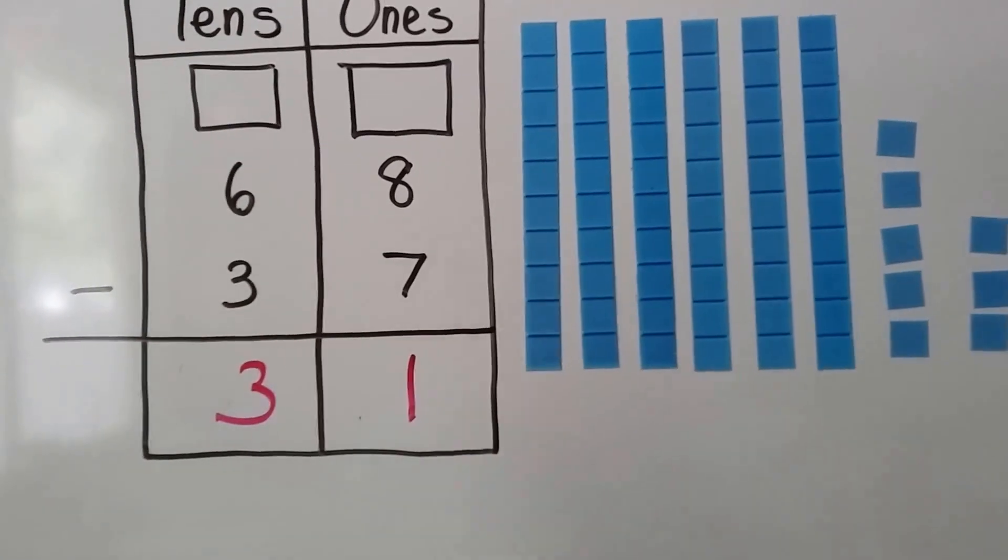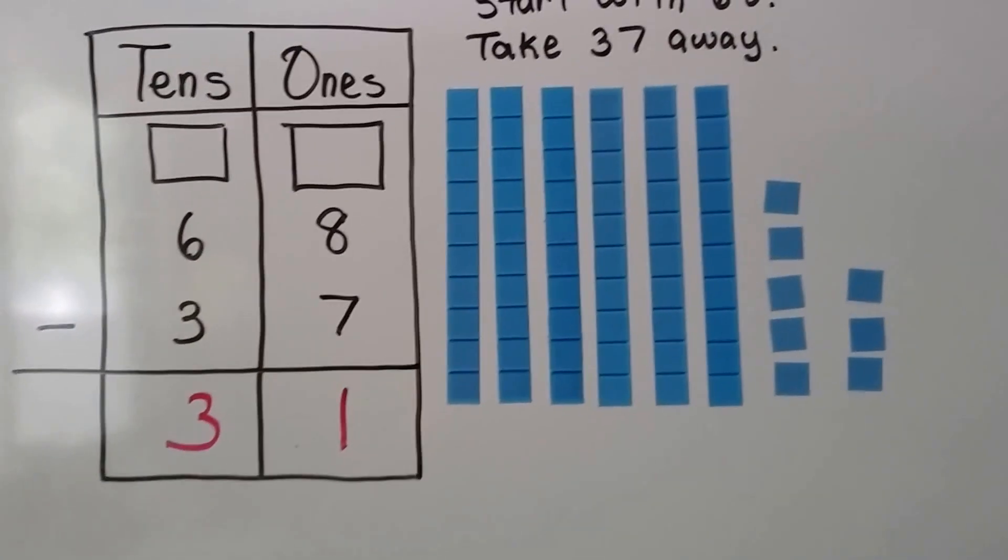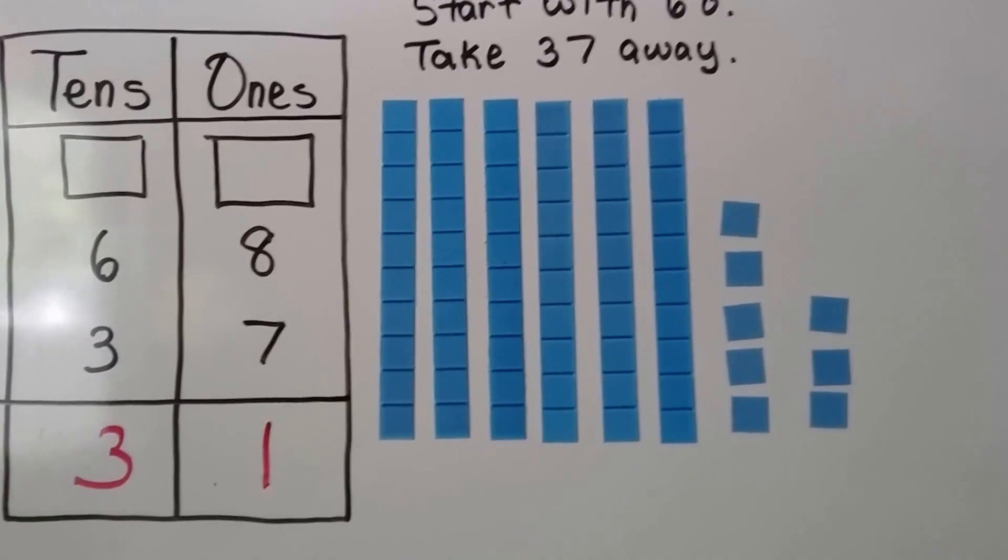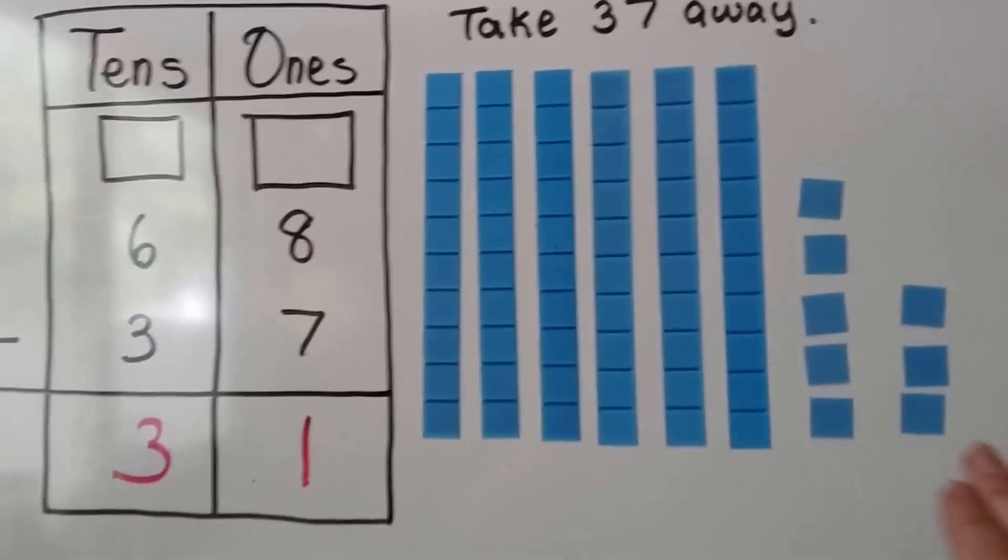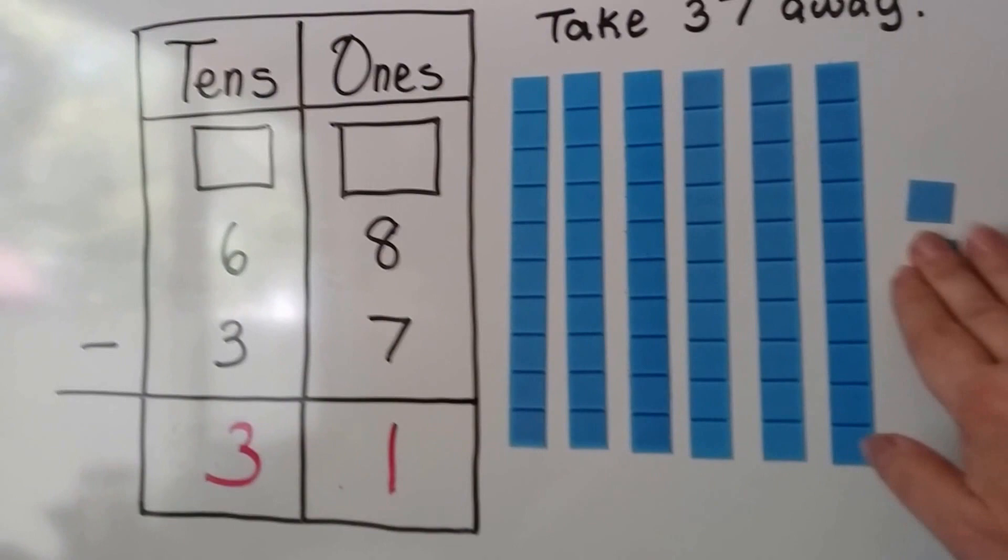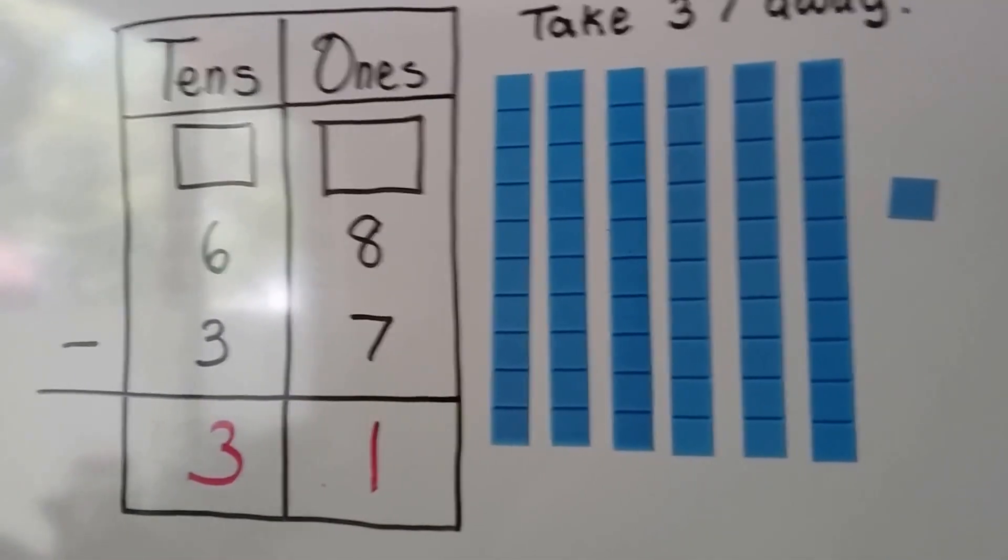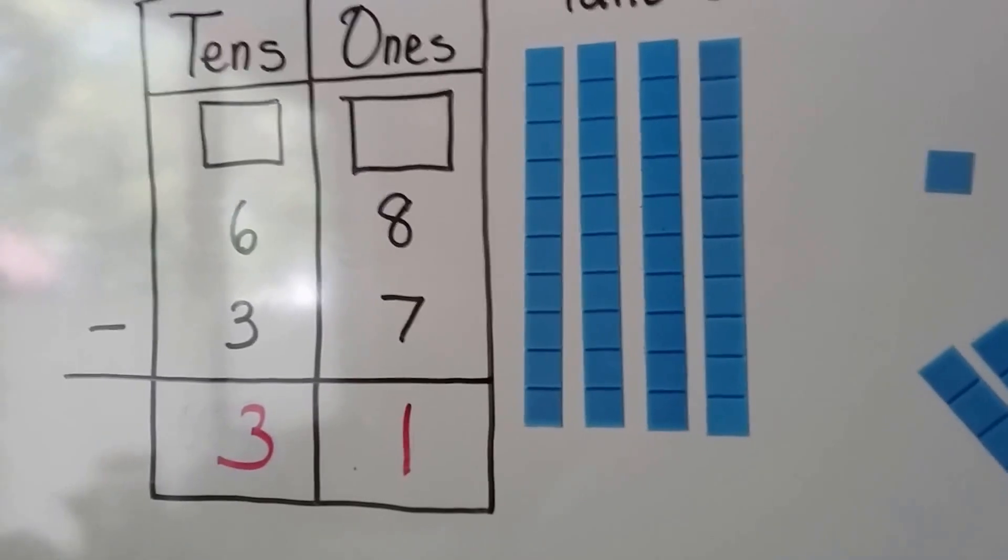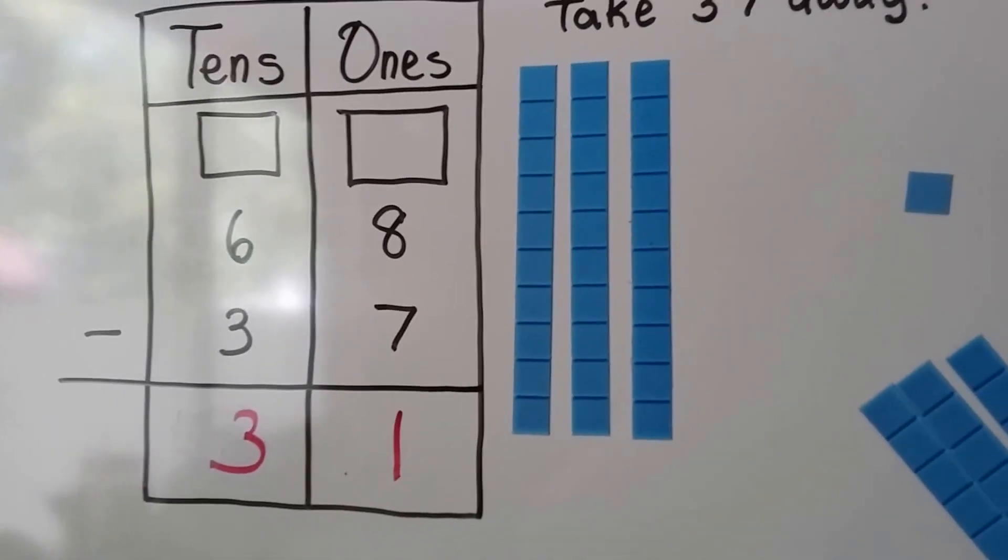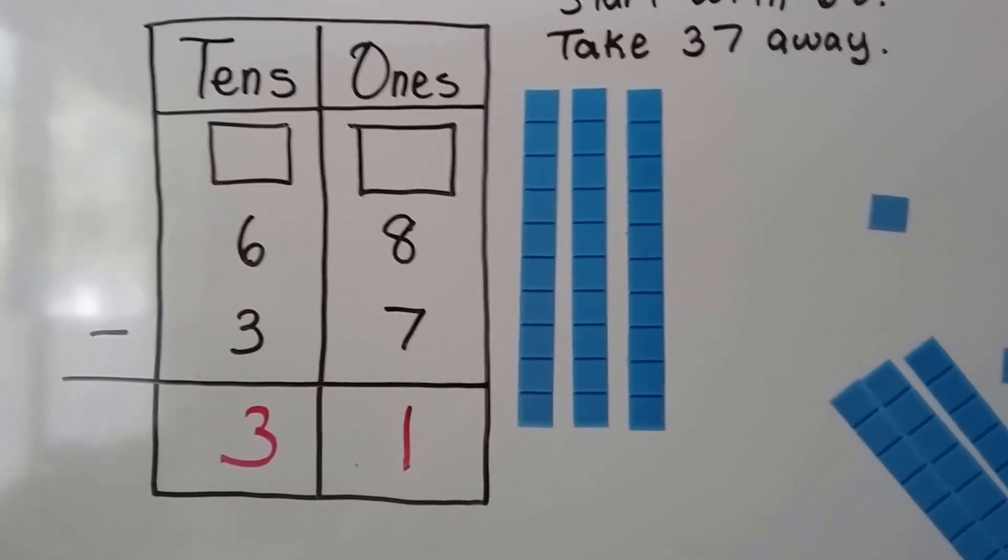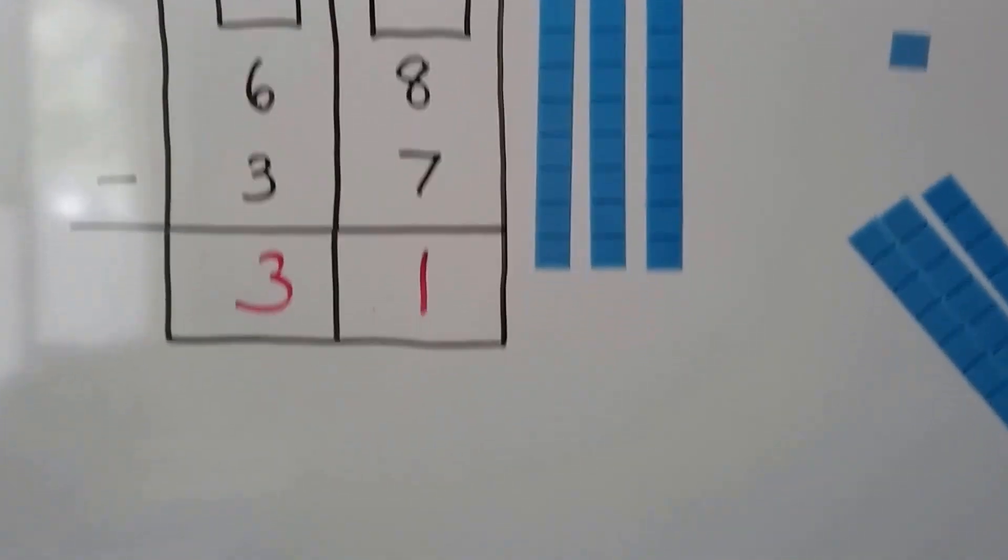We can check it with our models. We have 68 and we have 6 tens and 8 ones, and we're going to take away 37. 1, 2, 3, 4, 5, 6, 7. Now we take away 3 tens. 1, 2, 3, and we're left with 3 tens and 1 one. So we did it correctly.